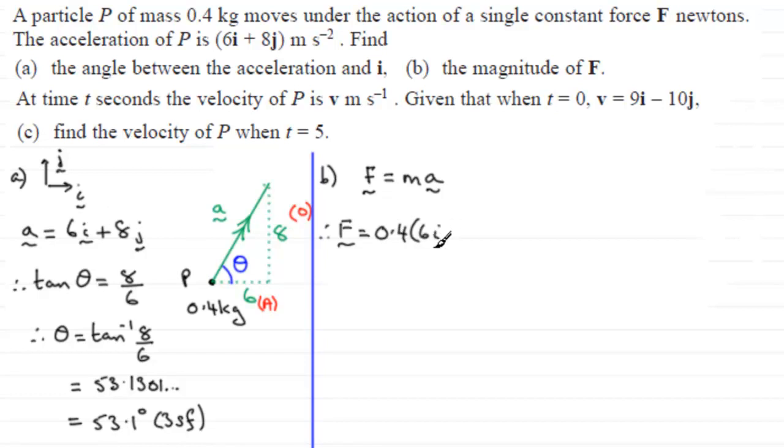So we've got 6i plus 8j. And if we expand this out, we're going to get 0.4 times the 6, which is going to give us 2.4i. And then 0.4 times the 8j, that's going to be plus 3.2j.